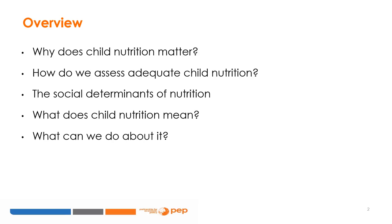As the overview shows, we will cover five themes within this broader topic of child nutrition: why child nutrition matters and why we should care about this; how we assess adequate child nutrition and measure whether a child is well-nourished, including the challenges to such measures; and how we measure impact on nutrition. The third theme is the social determinants of nutrition.